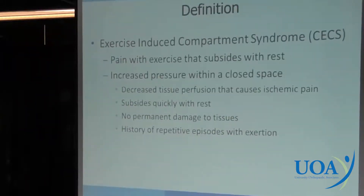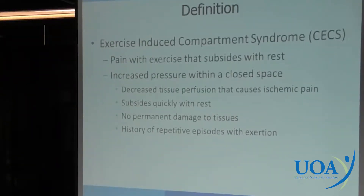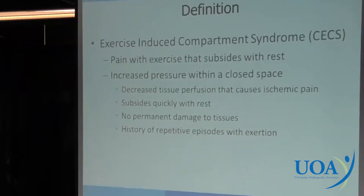What we're talking about today is chronic exertional compartment syndrome — it's exercise-induced compartment syndrome. It very typically is a pain that happens at very specific times, either a certain amount of exercise or a certain distance, and it happens very reproducibly. Basically, as your muscles swell with exercise, there's decreased tissue perfusion that once you stop the exercise, it goes away quickly. There's no permanent tissue damage, and it's repetitive — patients can tell you exactly how far they run or what exercise they're doing.